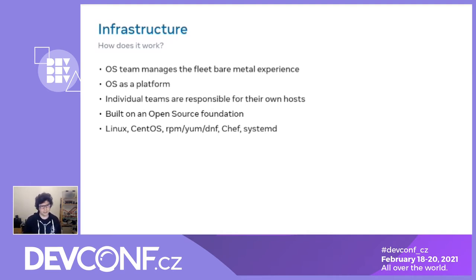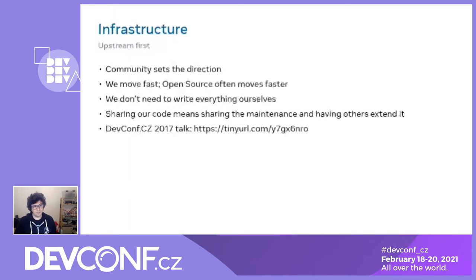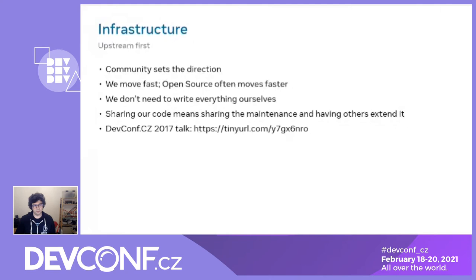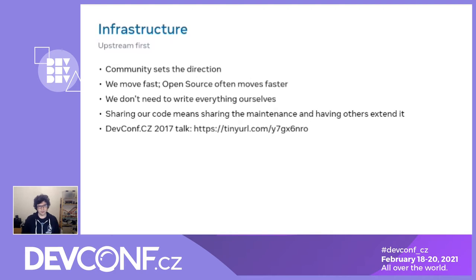We try as much as possible to work with open source because we think the community is where innovation tends to happen and what ends up setting the direction. If we can work with the community on features and make our use case understood, we can make things better for Facebook but also for the world at large. While Facebook prides itself on moving fast, the community often moves even faster — it's quite common for us to find a problem and then discover it's already been solved by the community.